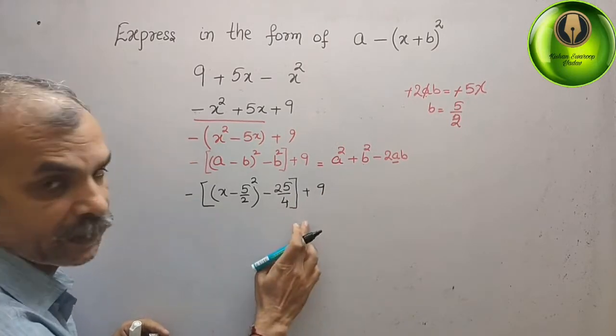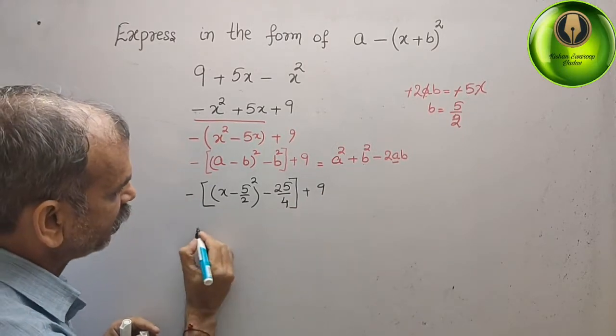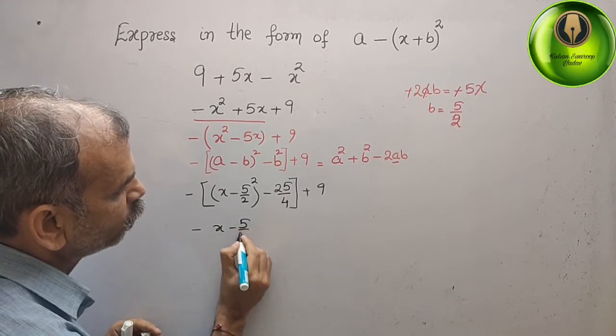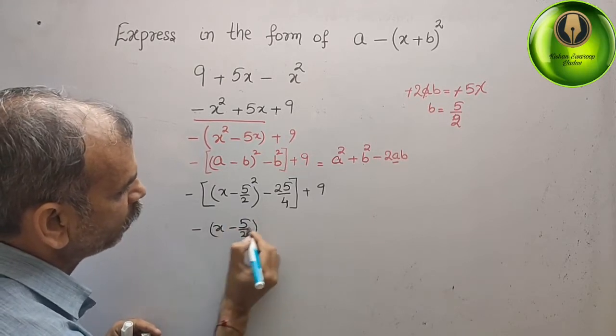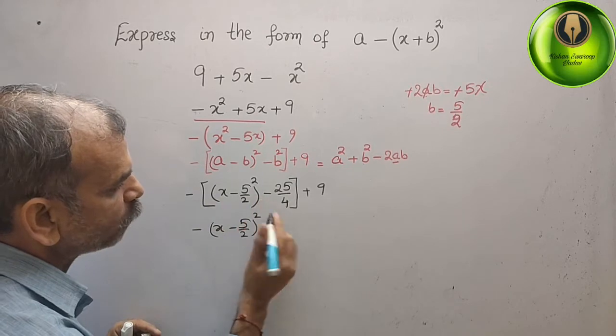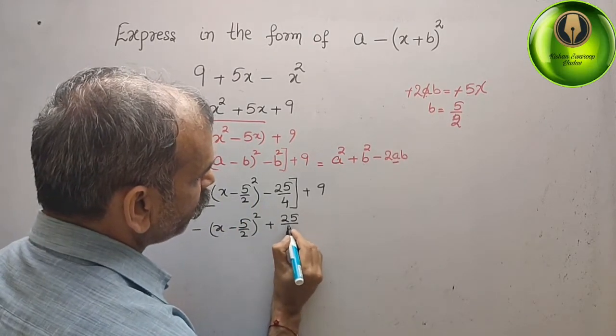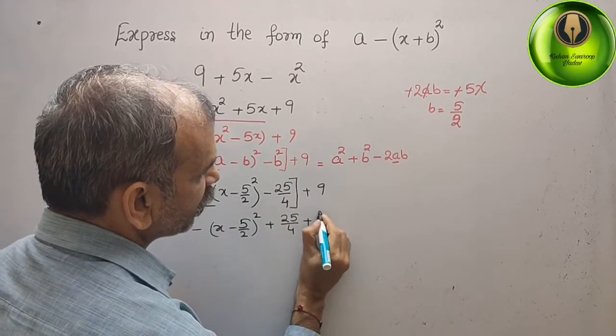Now, open this bracket. We will get minus x minus 5 by 2 whole square minus into minus is plus. Plus 25 by 4 plus 9.